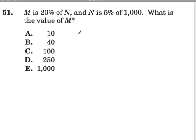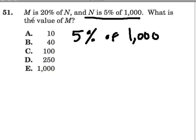One way of figuring this out is, first of all, finding 5% of 1,000. That will tell us what N is, because once we know what that number is, we know M is 20% of that letter. So we're working backwards. 5% of 1,000.